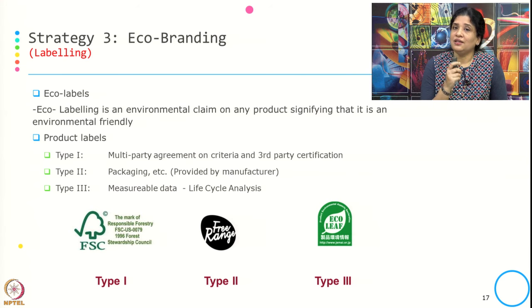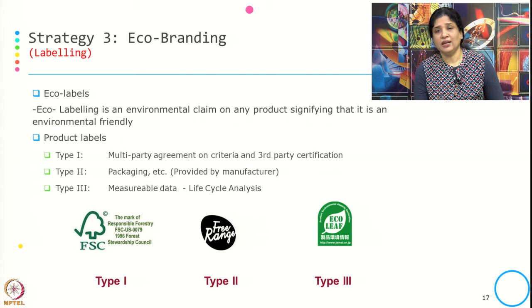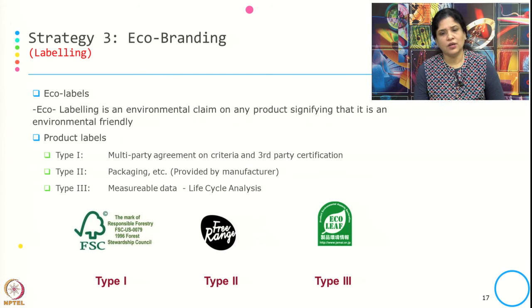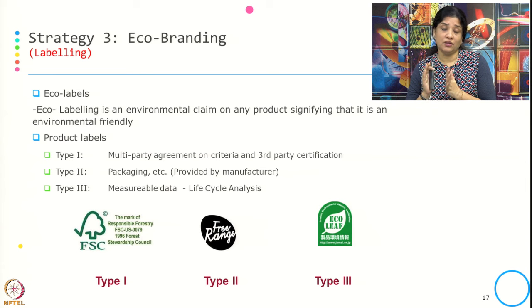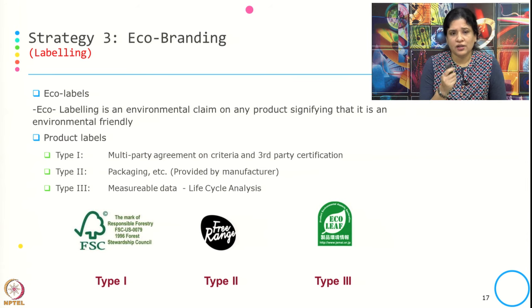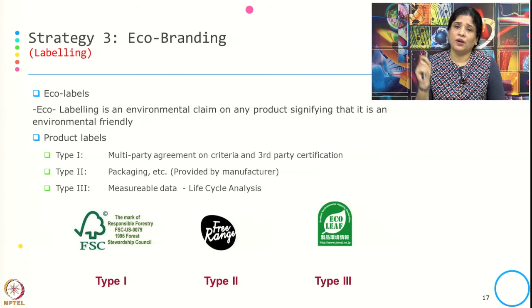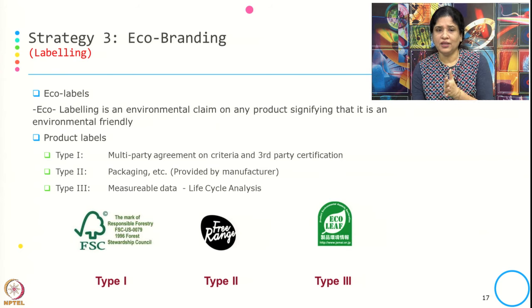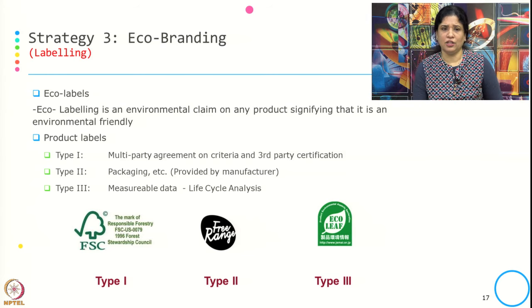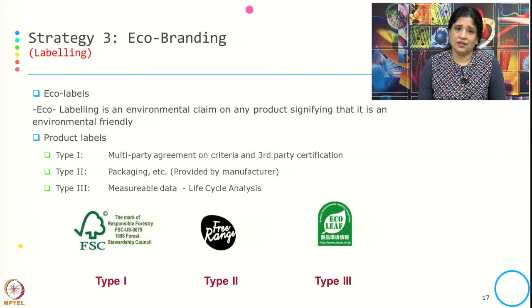All these product labels are divided into three categories of eco labeling. Type 1 is typically a multiparty agreement on criteria and third-party certification — the typical example is FSC (responsible forestry) certified by the Forest Stewardship Council. Type 2 labeling is mostly on packaging and is provided by the manufacturer — an example is 'free range.' Type 3 allows you to find out the impact created by the product — the typical example is Ecol'ab, where you get a life cycle analysis showing the impact at different stages.